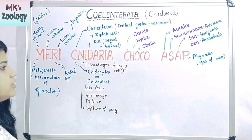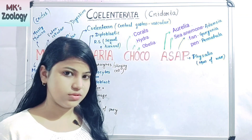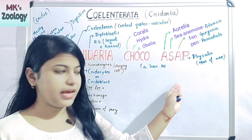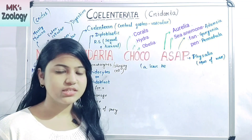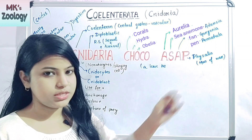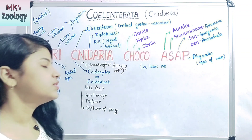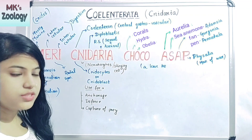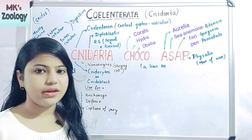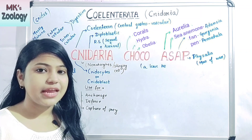The short trick is: 'Meri Cnidaria choko laa karke do, as soon as possible.' Suppose Cnidaria is a chocolate — we want our Cnidaria chocolate as soon as possible. Let's see the meaning of each letter. The first word is 'Meri.' The first letter M stands for mostly marine — the species belonging to phylum Cnidaria are mostly marine aquatic animals. Some are also freshwater, but mostly they are marine.